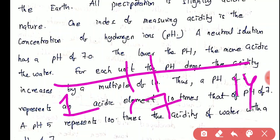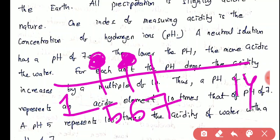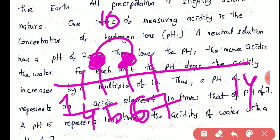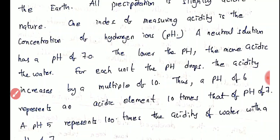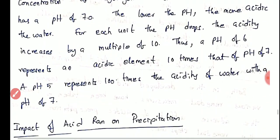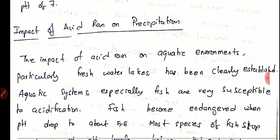Each unit of pH drop increases the acidity by a multiple of 10. So if there is an acid of pH 6 and another of pH 5, the pH 5 acid is 10 times more acidic than the pH 6 acid. Similarly, a pH 4 acid is 10 times more acidic than pH 5, meaning pH 4 is 100 times more acidic than pH 6.